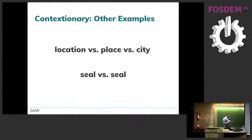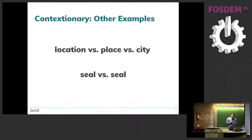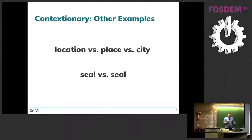Other examples for how we can use the contextionary: think of the words 'location,' 'place,' 'city.' Say we have three lists of restaurants — the top restaurants in your region — made by different people, and everyone has a different way of saying where the restaurant is located. The first says 'location,' the second says 'place,' the third says 'city.' For humans it's easy to see it's the same property, but if we're just matching strings this becomes very hard. By using context we can easily identify it's the same property.